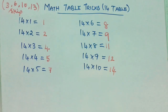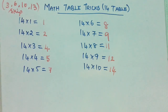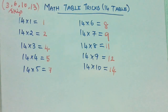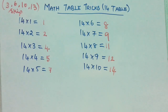Next we are going to write the 4 tables values. What is your 4 tables values? 4 ones are 4, 4 twos are 8, 4 threes are 12, 4 fours are 16, 4 fives are 20, 4 sixes are 24, 4 sevens are 28, 4 eights are 32, 4 nines are 36, 4 tens are 40.